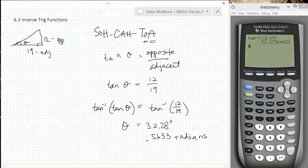Generally, we like to use radians when working with circles or function graphs, but we prefer degrees when we're working with triangles. So the best answer here would be theta equals 32.28 degrees.